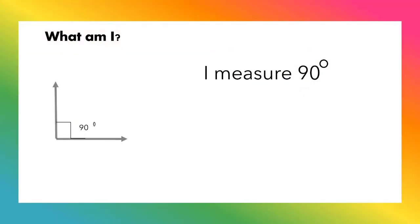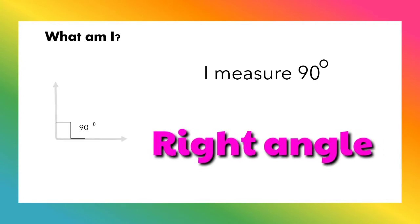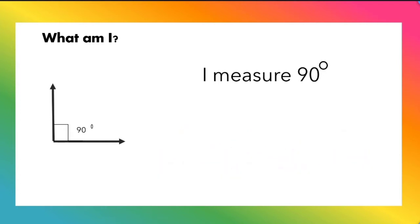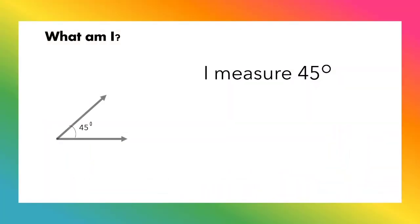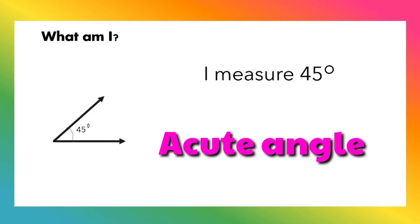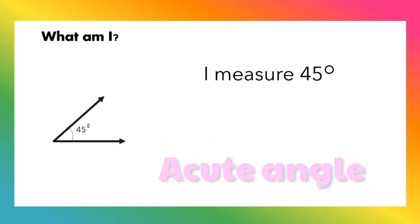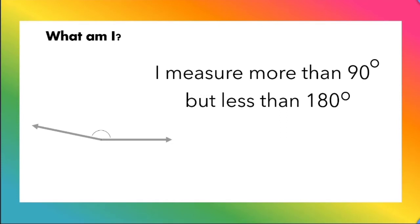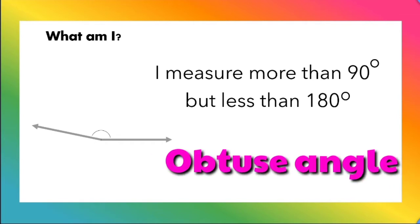I measure 90 degrees. Perfect! It is a right angle. I measure 45 degrees. Very good! It is an acute angle. I measure more than 90 degrees but less than 180 degrees. Fantastic! It is an obtuse angle.